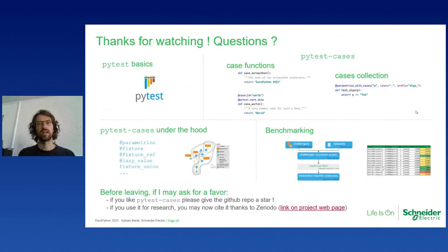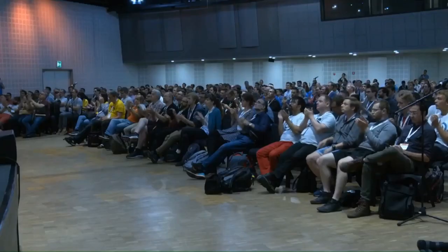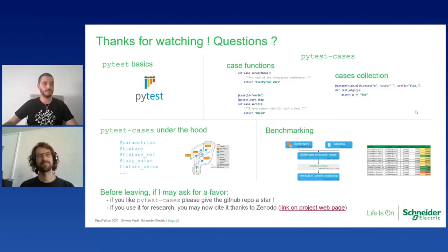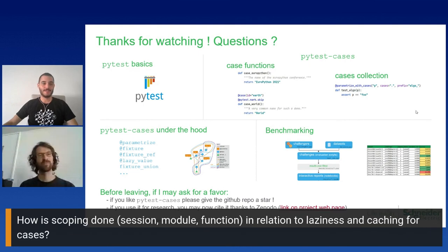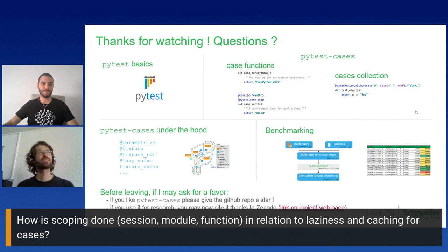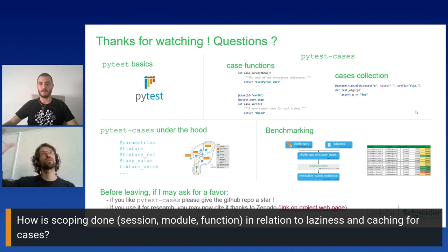Thanks for watching. I think it was a very interesting talk. We'll have some questions. How is scoping — session, module, or function — done in relation to laziness and caching for cases? Cases are function scope only, so it's like a parameter. They can rely on fixtures that have all the other kinds of scopes because those are bigger, but cases themselves are function scope.